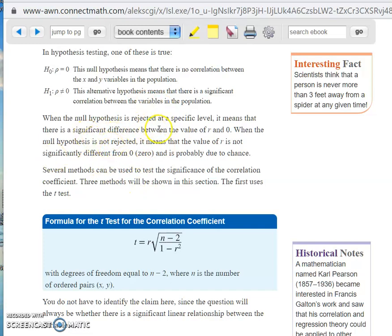So he certainly sums it up very nicely here. If you reject the null hypothesis at some specified level, alpha of 5%, it means that there is a significant difference between the value of R and zero. Now, R can be positive or negative. So is there a significant difference between R and zero? If you reject the null hypothesis, you're saying, yeah, there is a significant difference.